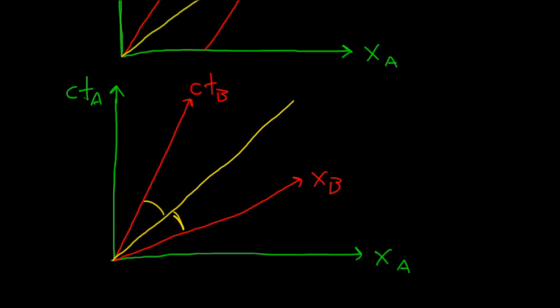And the faster you're going, the faster this observer is going relative to A, the tighter in these axes are going to be. So that could be the time of C, and this could be the spatial axis of C.